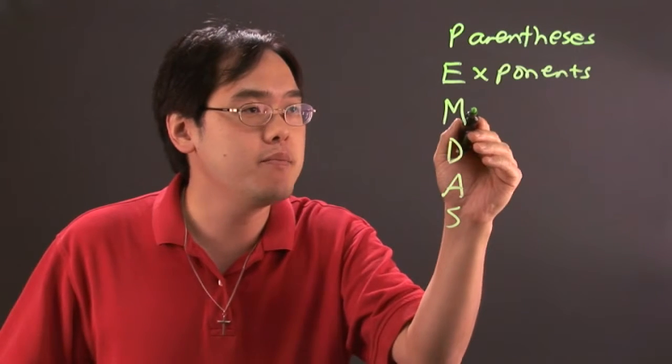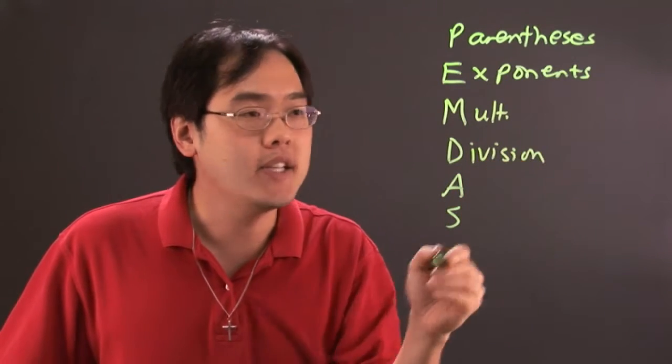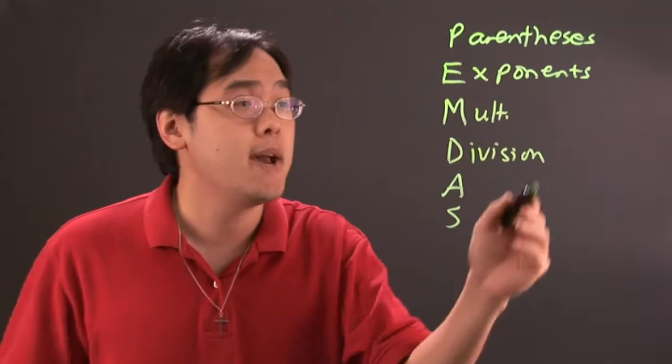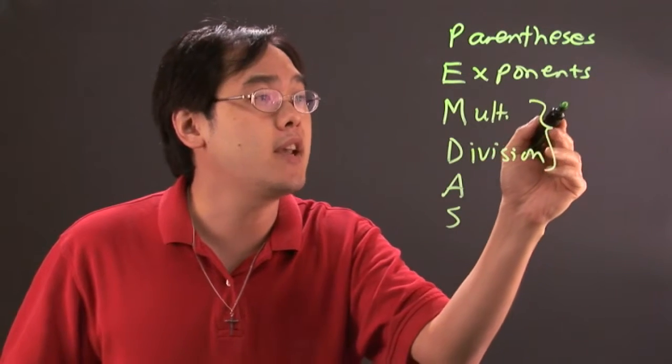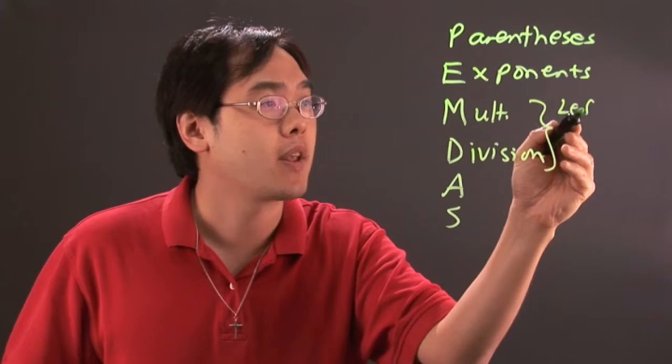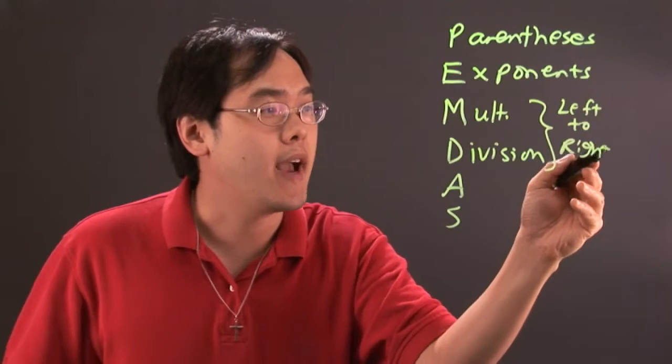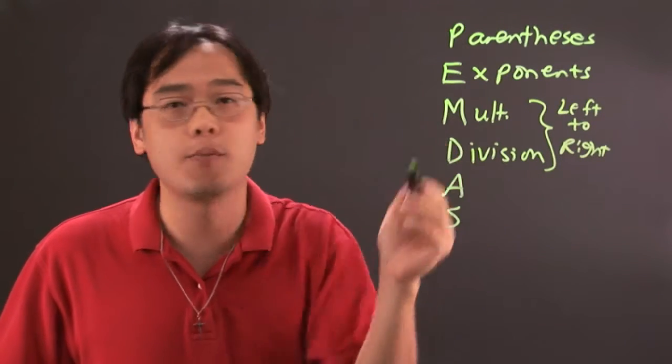M stands for multiplication and D stands for division. It's easy to think that multiplication comes before division but it honestly depends on what it is. The key here is you have to think about reading it from left to right. As you're reading from left to right, if the multiplication comes before division, then yes you do the multiplication first.